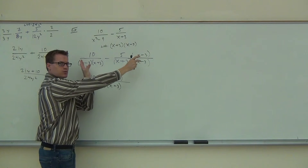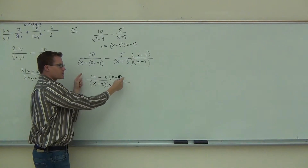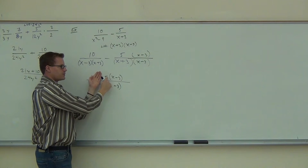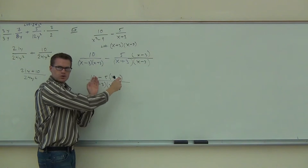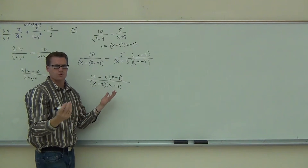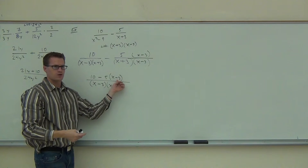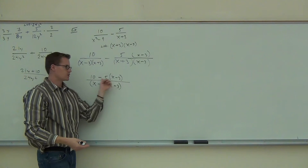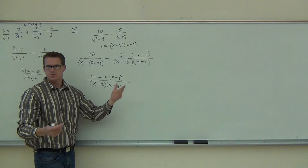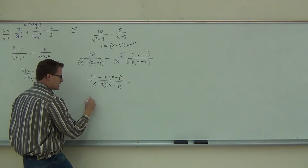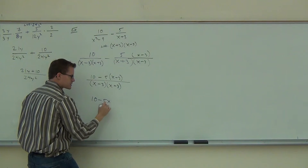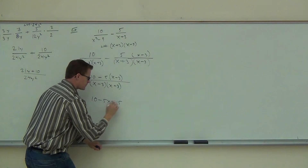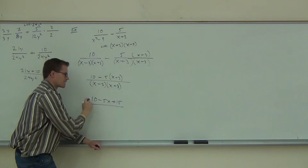We use the LCD to find equivalent rational expressions and make one fraction. But then we wait to distribute to this point, because now we can see it's not just 5—it's minus 5 that's going to distribute. The second sign will change. If you still have a minus there on a test, I know you don't understand it. So: 10, minus 5x, and then not minus 15—what do I get? Plus 15. I'll leave the denominator exactly like this.